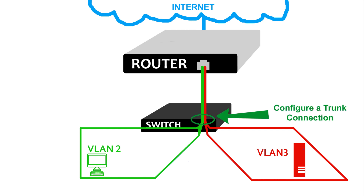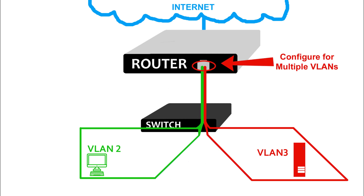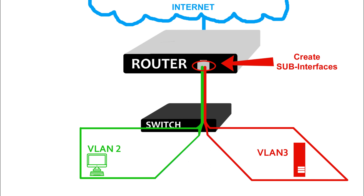Essentially, we create a trunk connection on the interface of this switch that will be connecting to the router. This trunk interface can send and receive traffic for any and all VLANs configured on the switch. On the other end of that cable — we're assuming a single Ethernet cable between the switch and the router — we configure that router interface to also be able to receive and send traffic for multiple VLANs. On a router interface, we can't necessarily create a trunk connection; we have to create multiple sub-interfaces on the corresponding physical interface of the router. Sub-interfaces all function exactly the way a single interface does, but they are set up and configured inside the router's configuration.